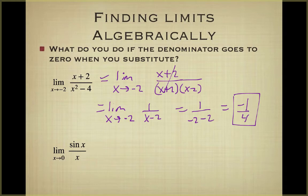So if we have something that goes to zero in the denominator, we can always look to see if we can simplify our function before substitution to get rid of that zero denominator. In this case we can factor, cancel the factor, then evaluate and we get the limit of negative 1/4.